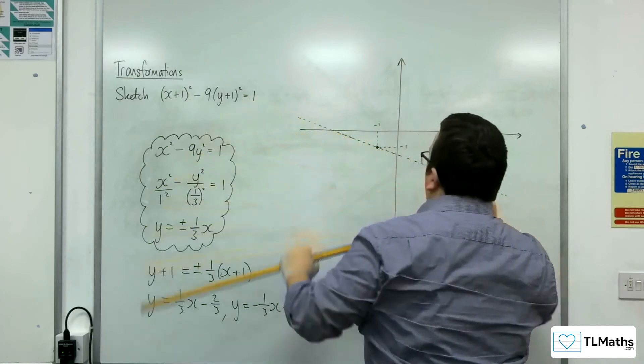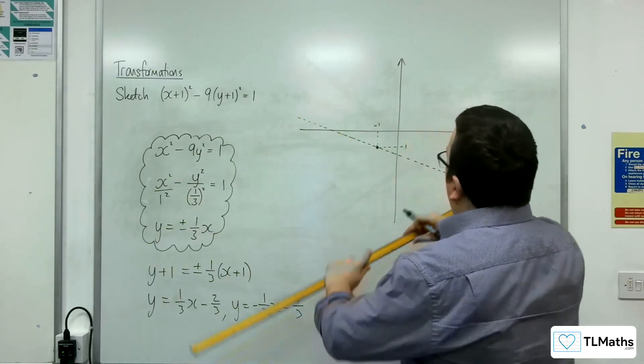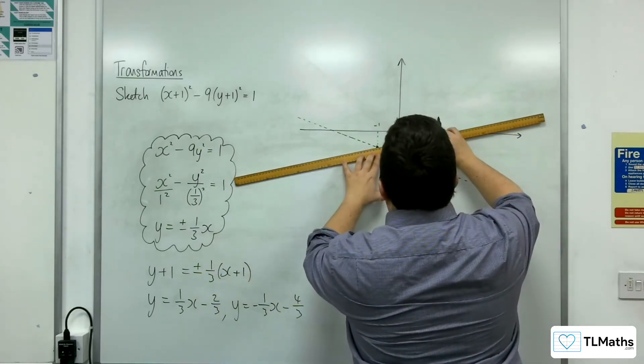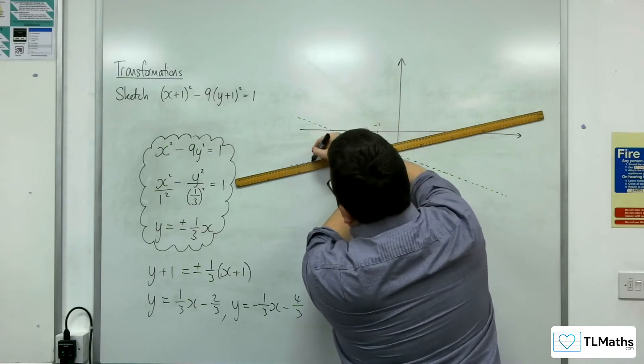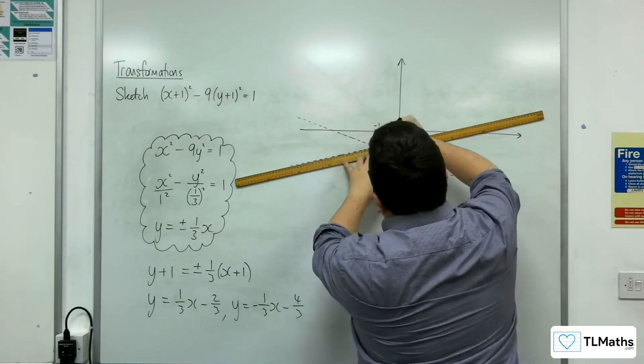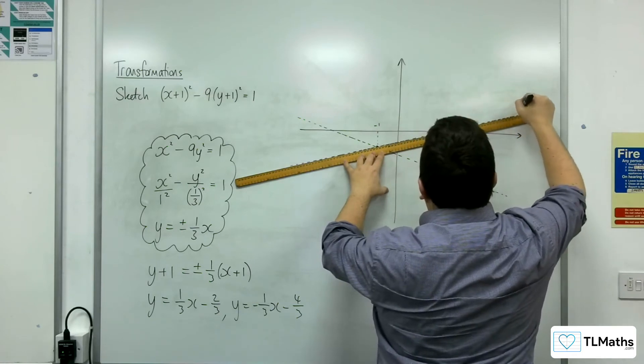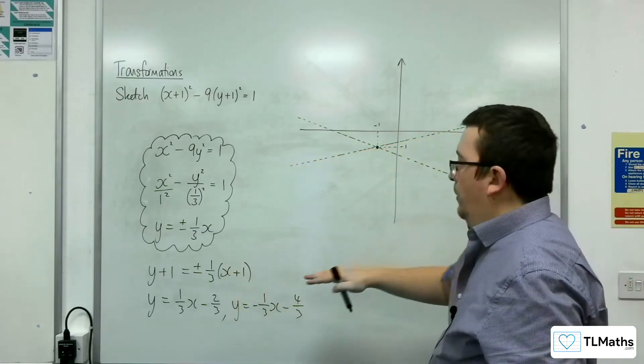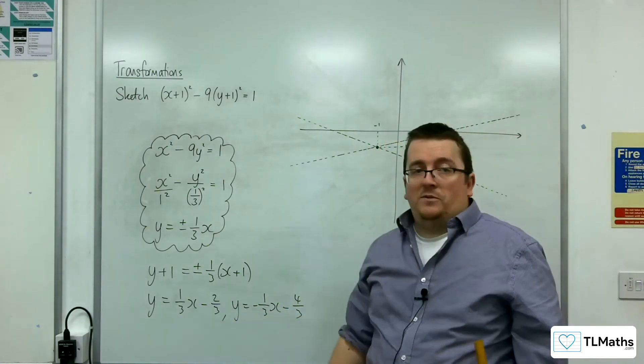So that one is going to be that one. And then this one will be the y = (1/3)x - 2/3. So they're my two asymptotes.